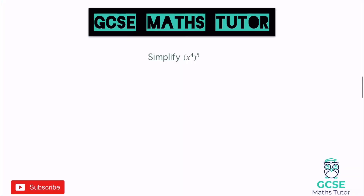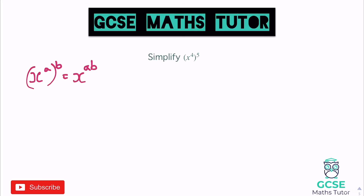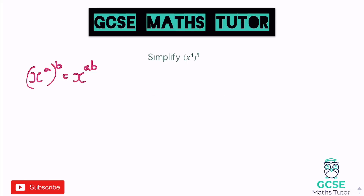Now let's look at some slightly different ones — we've got some brackets involved. When you have x to the power of a, in brackets to the power of b, you multiply the powers, giving x to the power of a times b. Thinking about this logically: x to the power of 4 in brackets to the power of 5 just means x to the power of 4 multiplied by itself 5 times. Adding together five 4s is the same as multiplying by 5, so 4 times 5 is 20, giving x to the power of 20.